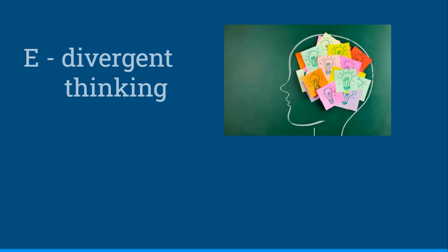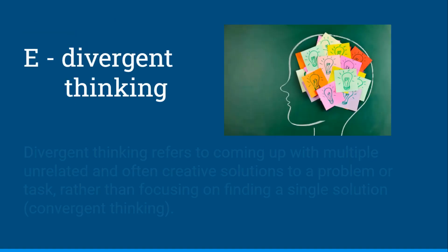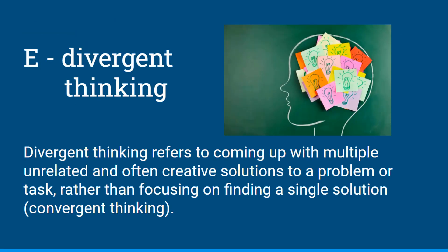And this would be E, divergent thinking. Divergent thinking refers to coming up with multiple unrelated and often creative solutions to a problem or task, rather than focusing on finding a single solution, which would be convergent thinking.